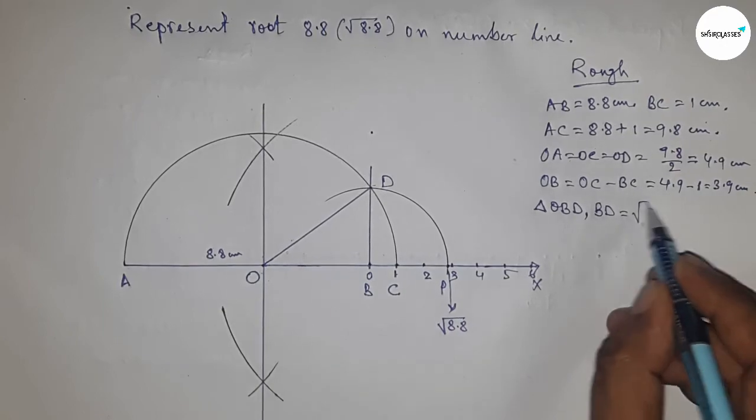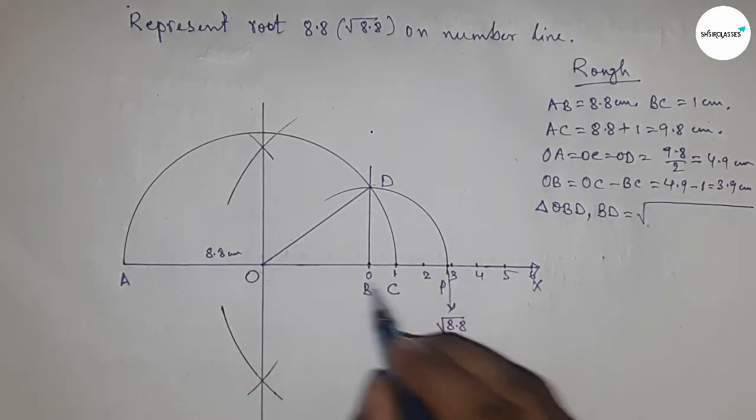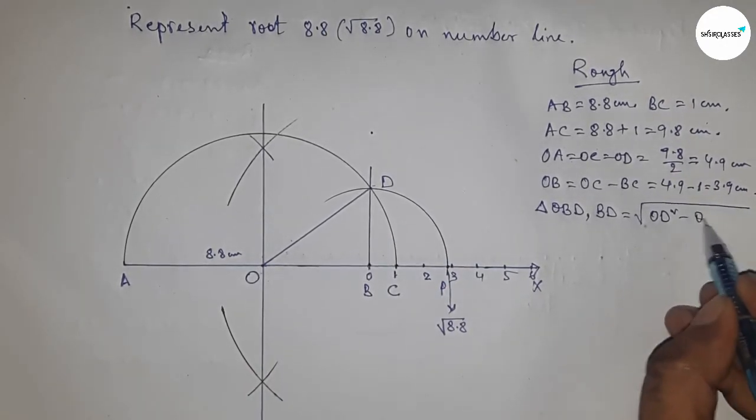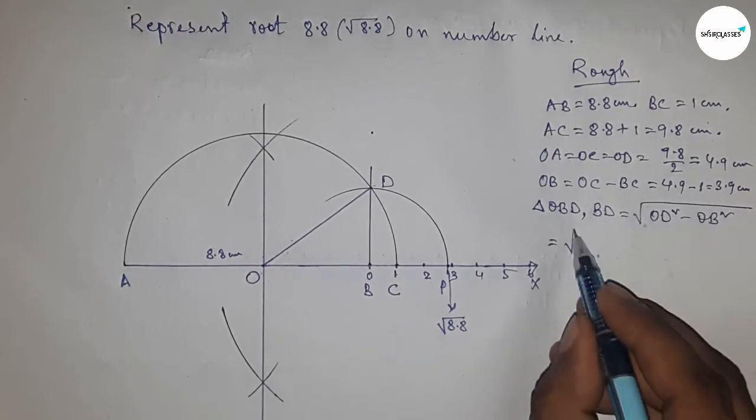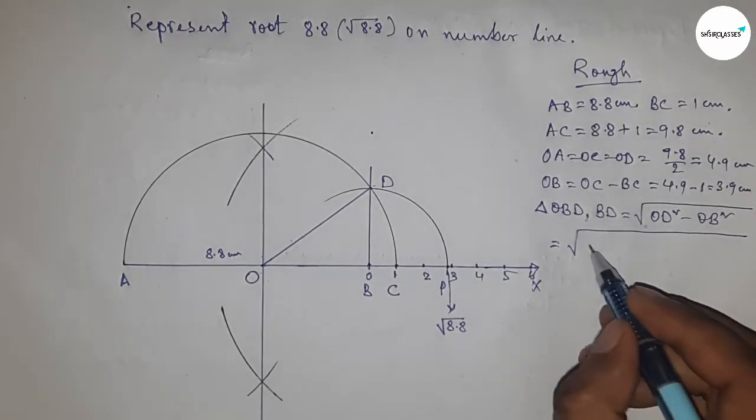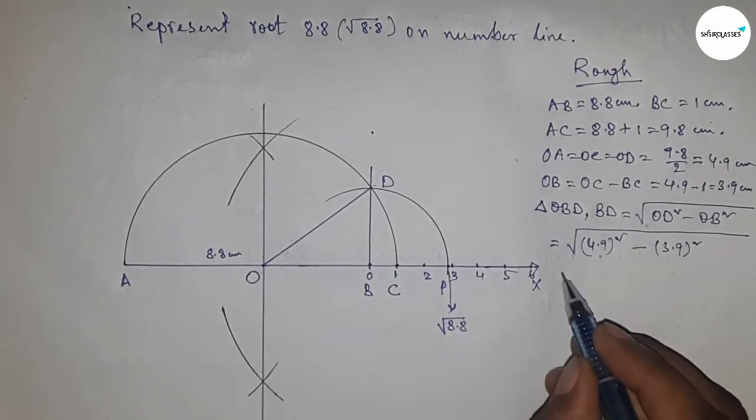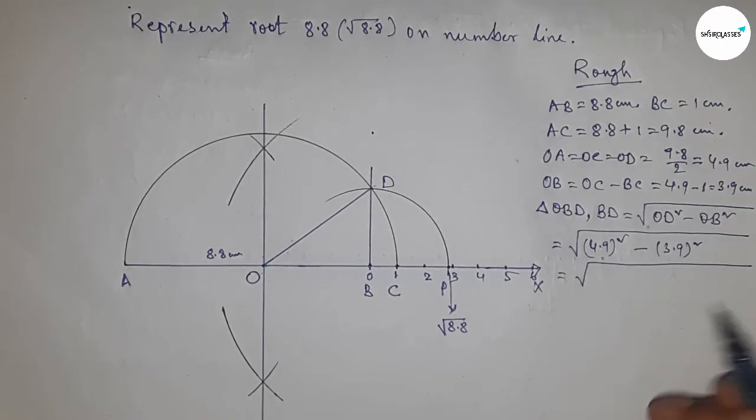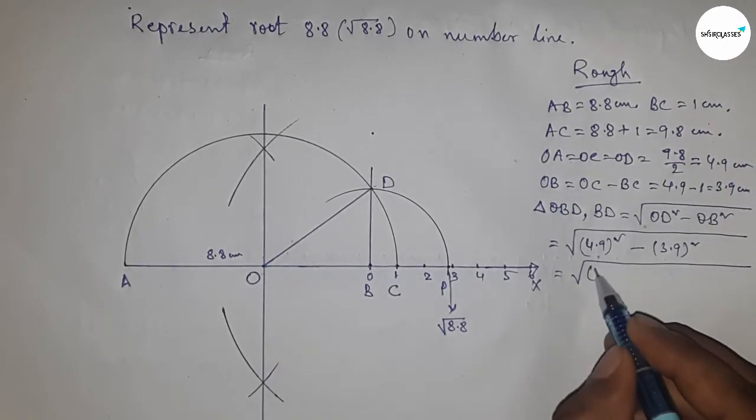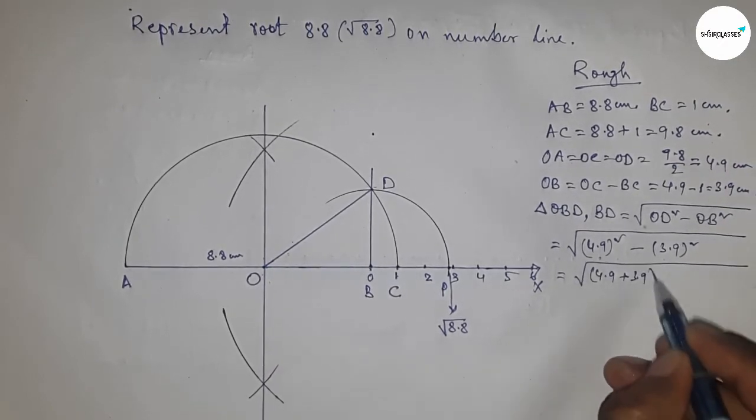That means hypotenuse squared minus base squared. Put the values of OD and OB. Now apply the formula a² - b² = (a + b)(a - b). Apply the formula here.